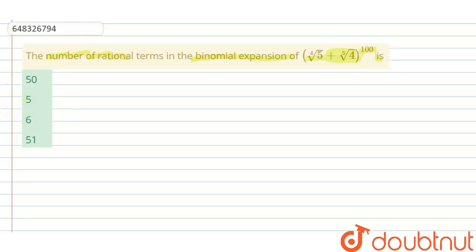For this we have to write the general term for this. The general term for this expression is 100Cr times 5 raised to the power (100 minus r) by 4, multiplied by 4 raised to the power r by 5.